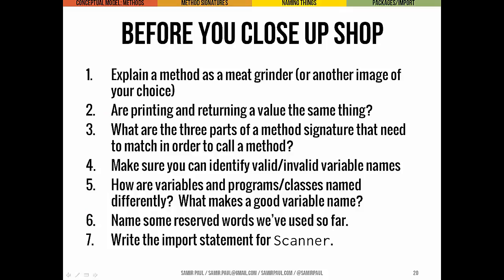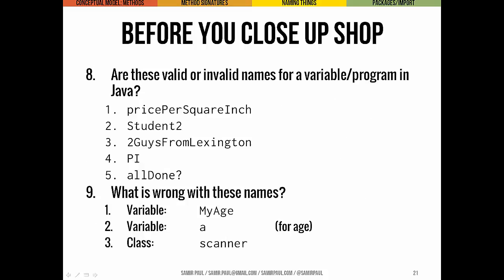Before you close up, make sure you can explain a method using the meat grinder input-output model. Be able to answer: are printing and returning a value the same thing? Can you name the three parts of a method signature? Can you identify whether a variable name is valid, invalid, good style, or bad style? Know how we differentiate names for programs, classes, and variables, and what makes a good variable name. Know some reserved words we've used so far, and know how to write an import statement — particularly for the Scanner class.